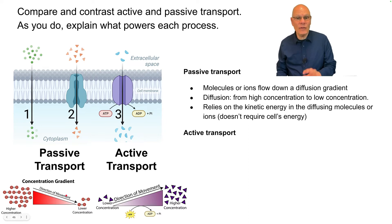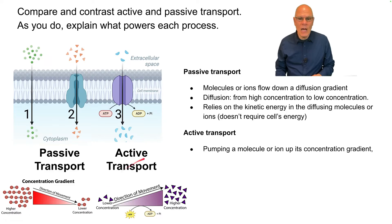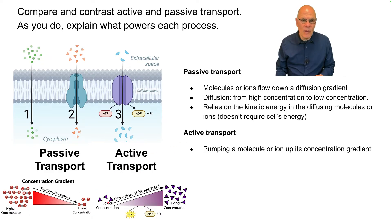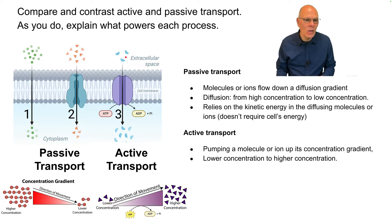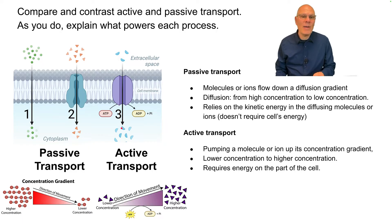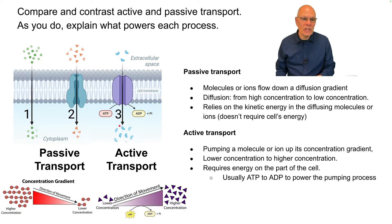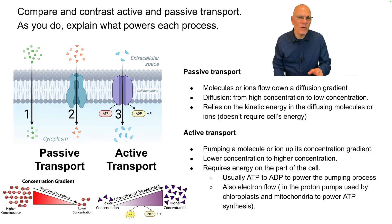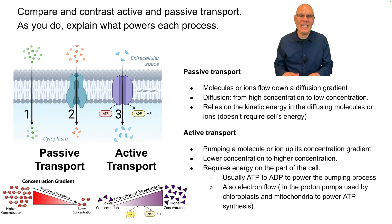That's different from active transport, where we're pumping a molecule or ion up its concentration gradient from lower concentration to higher concentration. That requires an energy expenditure on the part of the cell — usually ATP being converted into ADP and phosphate to power the pumping process. Also, the flow of electrons can power the pumping of protons, which is important in the creation of ATP itself.